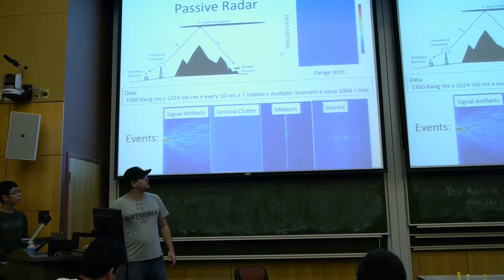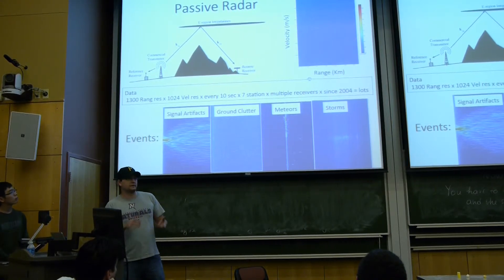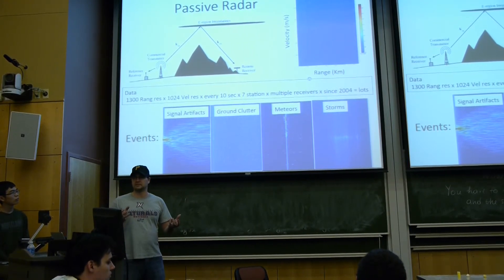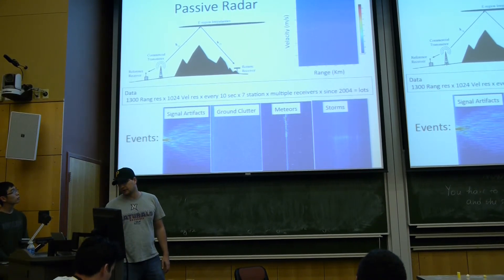When you process this data, you get an image that looks like this that gives you a range that's dependent upon the two stations being correlated against each other and Doppler shifting of the signal.